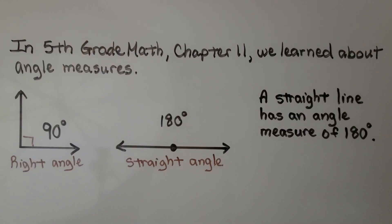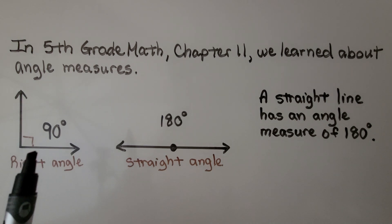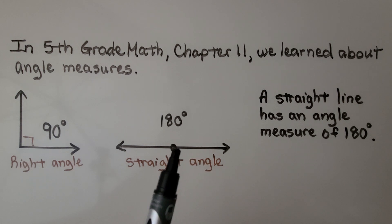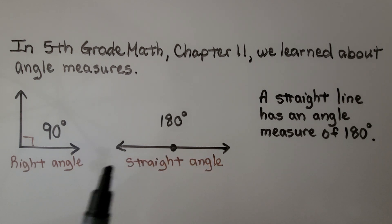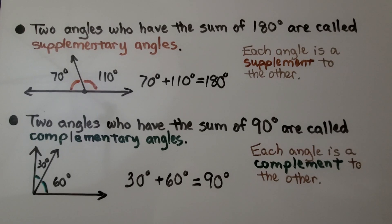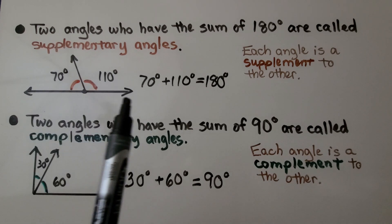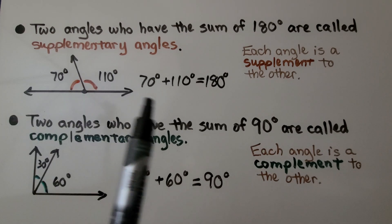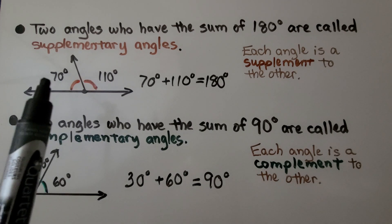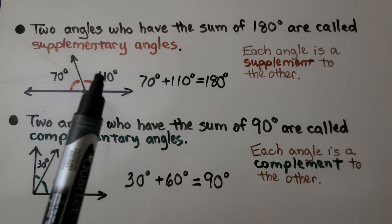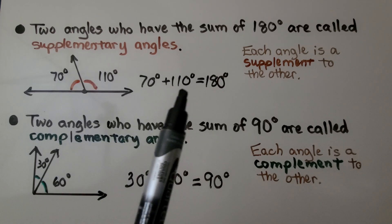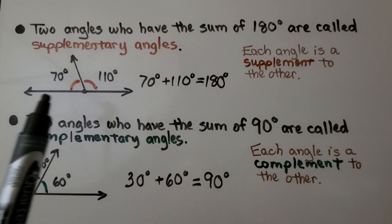In 5th grade math, Chapter 11, we learned about angle measures. We learned that a right angle is 90 degrees, and a straight angle is 180 degrees — it's a straight line. Two angles that have the sum of 180 degrees are called supplementary angles. For example, this angle is 70 degrees and this angle is 110 degrees; together they equal the 180 degrees for this line.